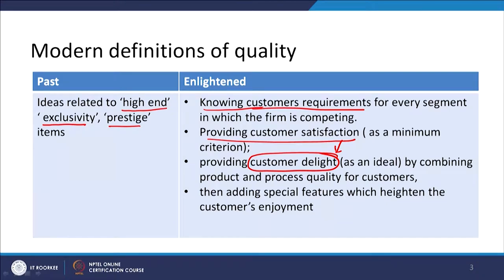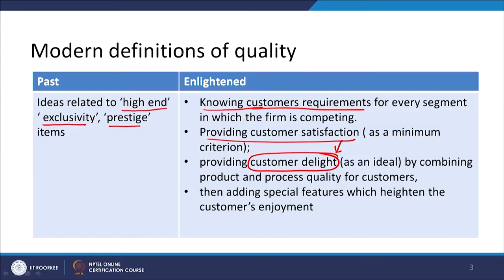Customer satisfaction has become a thing of the past, and nowadays modern organisations believe that we need to delight our customers. How do I delight customers? By providing the combination of product and process quality. If I am able to match product and process quality — which we just discussed — that combination will help us give customer delight, and that is now desirable for the organisation.